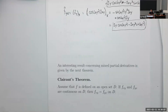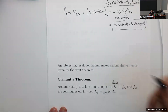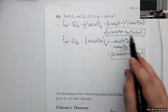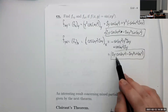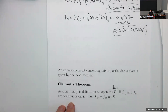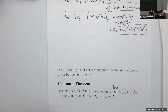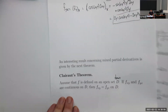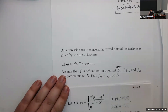Clairaut's theorem: assume f is defined on some open set D with x and y values. If the mixed partials are continuous on D, then they are equal on the domain. Since the functions in our example are continuous, the mixed partials are equal. We don't run into discontinuous derivatives often — it has to be contrived. So most of the time you can do mixed partials in any order you want.